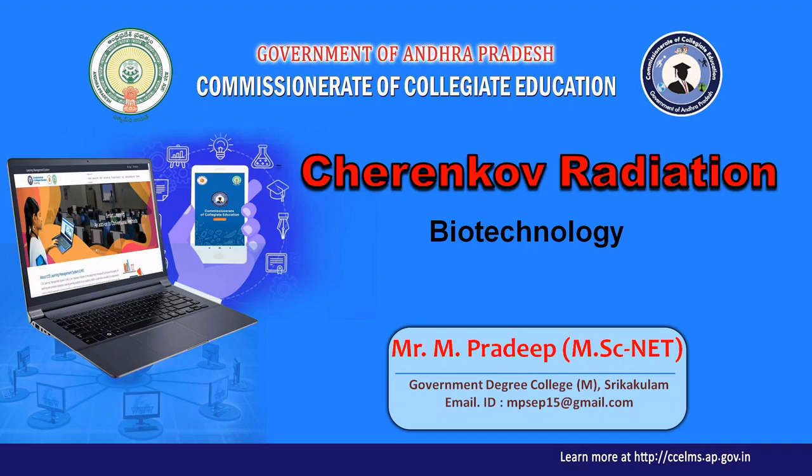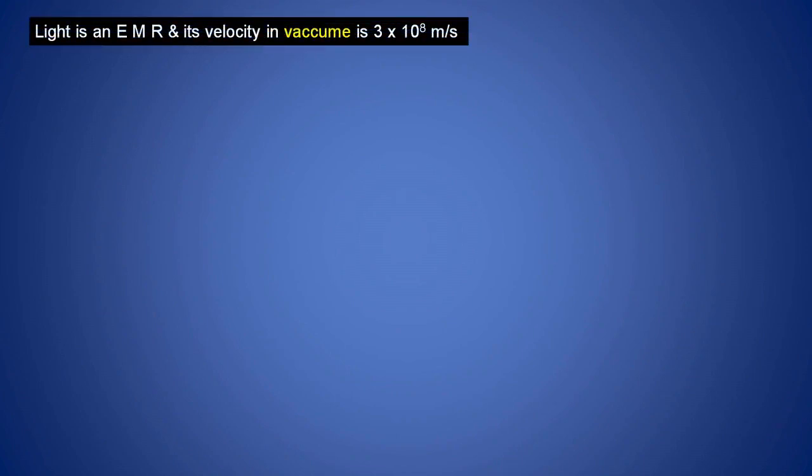Before going to the main topic, let us first briefly discuss about light. What is light? Light is an electromagnetic radiation — a type of radiation which possesses both electric and magnetic properties along with some energy. Light is an electromagnetic radiation and its velocity in vacuum is 3 × 10⁸ meters per second.